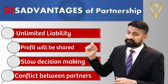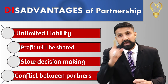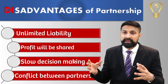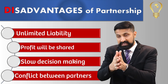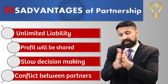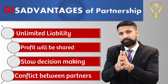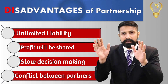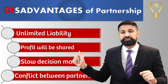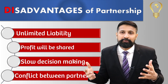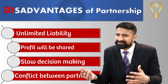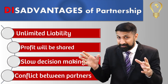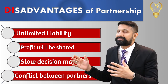Disadvantages of partnership: سب سے پہلا ہے unlimited liability — same as sole trader۔ آپ legally اپنے business سے الگ نہیں ہیں، اس لیے اگر business bankrupt ہو گیا تو آپ کا سامان، گھر، گاڑی سب جائے گا۔ Profit will be shared بھی ایک disadvantage ہے — ایک لاکھ کا profit آ رہا ہو اور اس میں سے کوئی اور بھی لے لے تو برا لگتا ہے۔ اگرچہ loss share ہونا advantage ہے، لیکن profit share ہونا ایک طرح سے disadvantage ہے۔